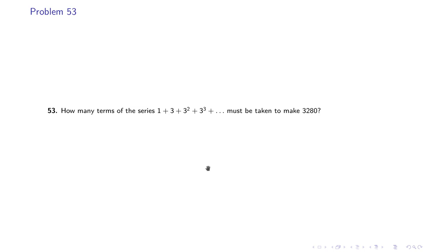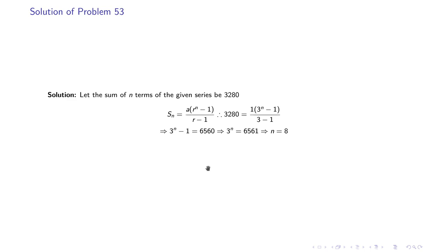Problem 53: How many terms of the series 1 + 3 + 3² + 3³ must be taken to make 3280? Here the sum equals 3280, so: 1 × (3^n − 1) / (3 − 1) = 3280. Multiplying 2 by 3280 gives 6560, so 3^n = 6561 (moving −1 to the right-hand side and adding it to 6560). Therefore n is equal to 8.